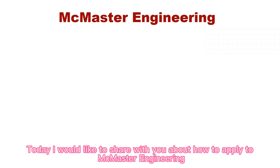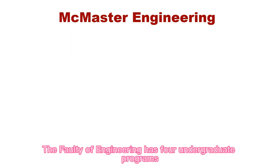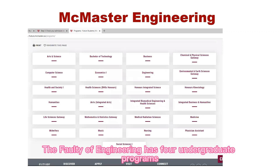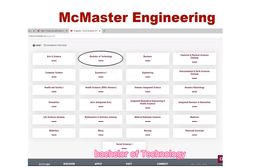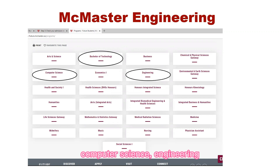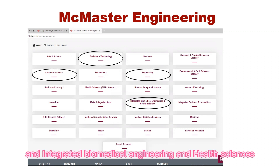Hi, today I would like to share with you about how to apply to McMaster Engineering. The Faculty of Engineering has four undergraduate programs: Bachelor of Technology, Computer Science, Engineering, and Integrated Biomedical Engineering and Health Sciences.